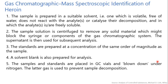Stages involved in the identification of heroin by GC-MS: First, the sample is prepared in a suitable solvent — one which is volatile, free of water, does not react with analytes or catalyze their decomposition, and in which the analyte is readily soluble. The sample solution is centrifuged to remove any solid material which might block the syringe or components of the gas chromatographic system. The supernatant is then used for subsequent analysis.